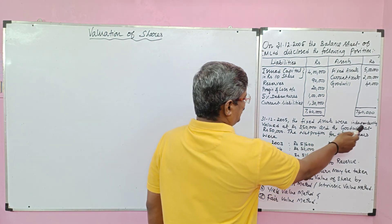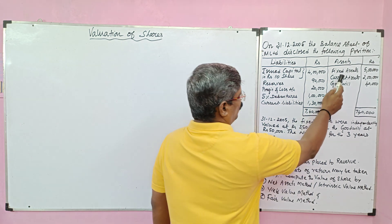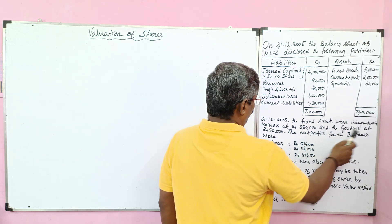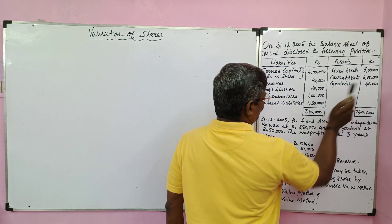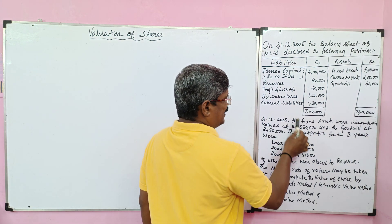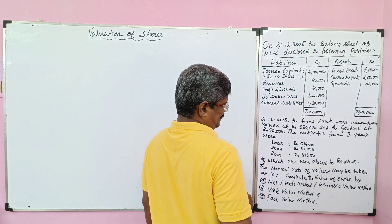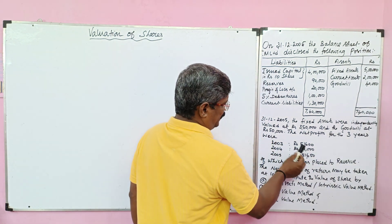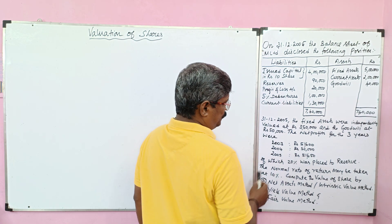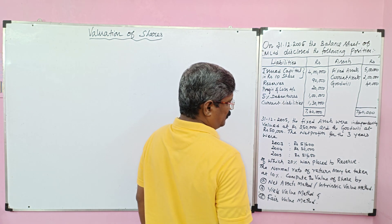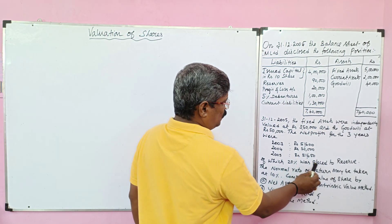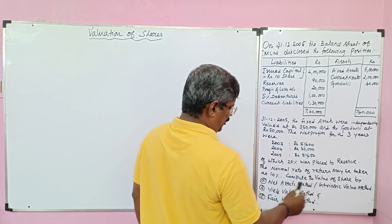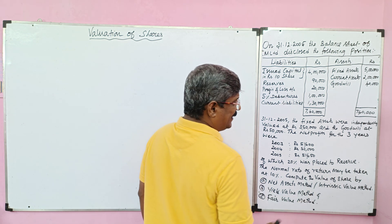On 31st December 2005, the fixed assets were independently valued at rupees 3 lakh 50 thousand — the old value was 5 lakh, the new value is 3 lakh 50 thousand. Goodwill was revalued at rupees 50,000 — old value 40,000, new value 50,000. These are called realized values of assets. The net profits for three years: 2003 — rupees 51,600; 2004 — rupees 52,000; 2005 — rupees 51,650, of which 20% was placed to reserve. The normal rate of return is 10%. Compute the value of shares by the net asset method, also called the intrinsic value method.